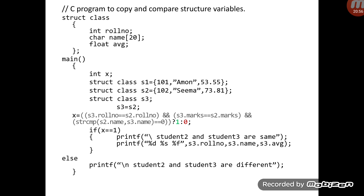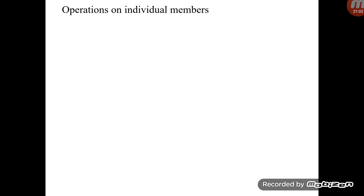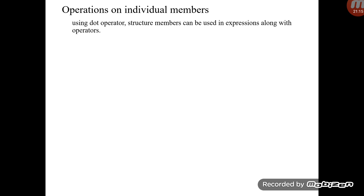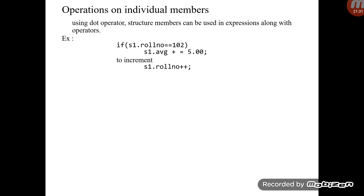So, copying structure variables is straightforward using the assignment operator, but comparison must be done manually for every structure member. Various operations — comparisons, arithmetic like incrementing by 5 or by 1 — can be performed on individual members; access is always through `structure_variable.member_name`.